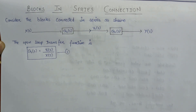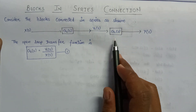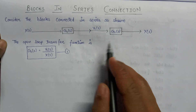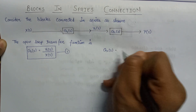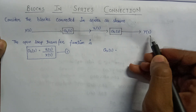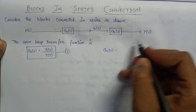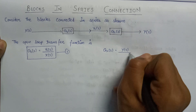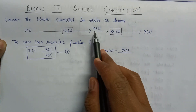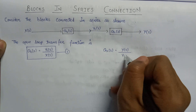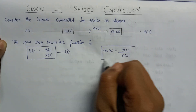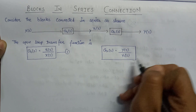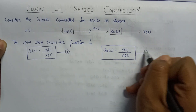This is equation number one. Also, if we write the open loop transfer function for the second block, then it will be equal to G2(s), which equals the Laplace transform of output Y(s) divided by the Laplace transform of input Y1(s). This is equation number two.